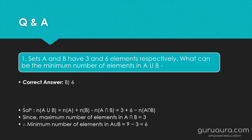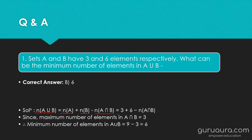Now let's see the answer. Sets A and B have three and six elements respectively. We have a formula: N(A∪B) = N(A) + N(B) − N(A∩B). Substituting the values, N(A) = 3 and N(B) = 6, we get N(A∪B) = 3 + 6 − N(A∩B).